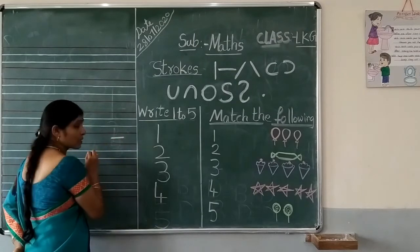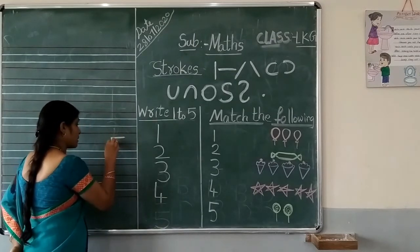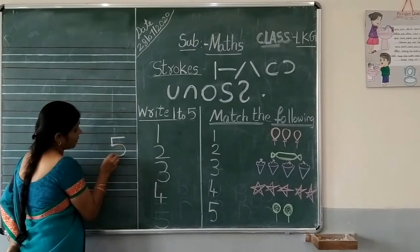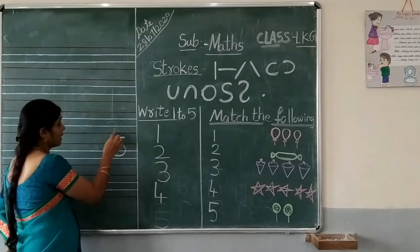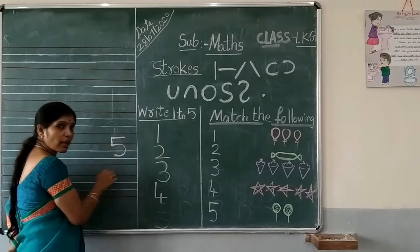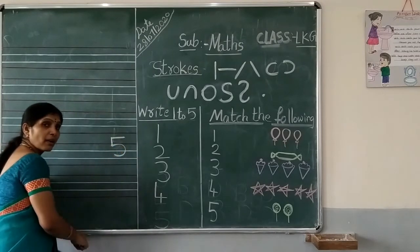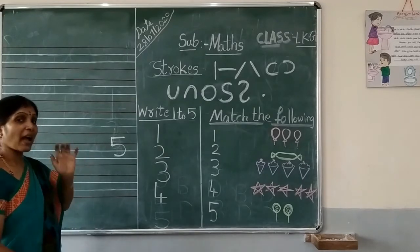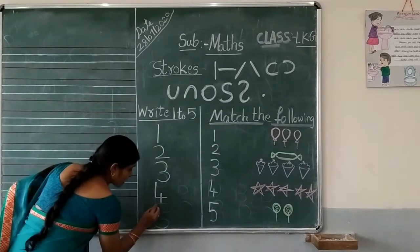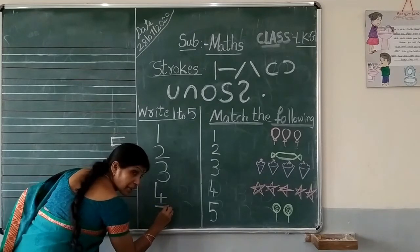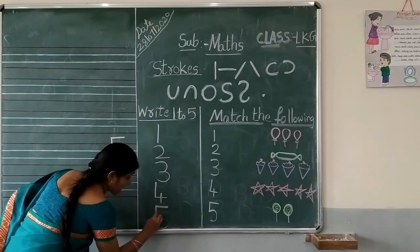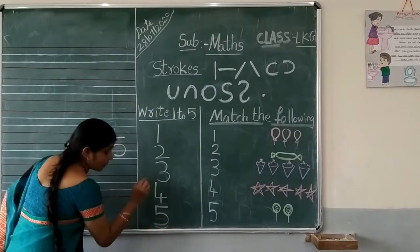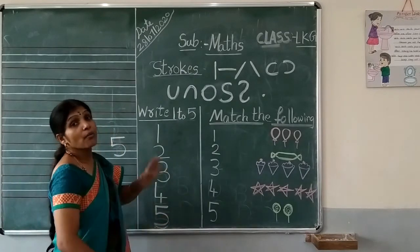One sleeping line, one standing line, one left curve. Now we wake up, number 5. Come on children, let's try number 5. One sleeping line, one standing line, one left curve. Now we wake up, number 5.